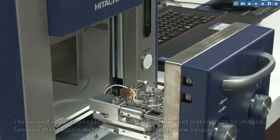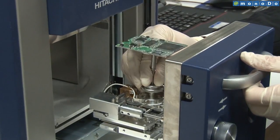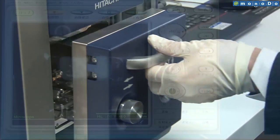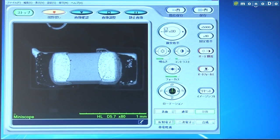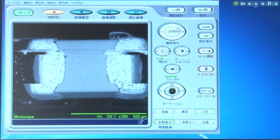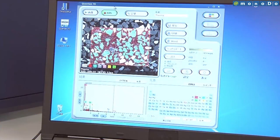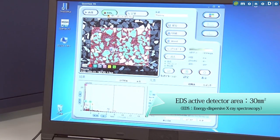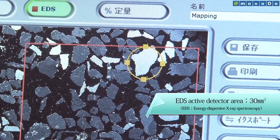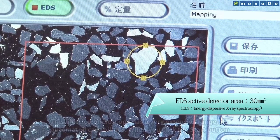Hitachi High Technology's proven low vacuum technology creates an optimal working environment enabling bright imaging and fast scanning even in low vacuum mode. An EDS detector with a 30-square-millimeter detection area is also available as an option so elemental analysis can now be done even more quickly.